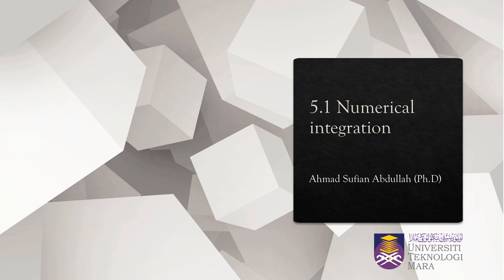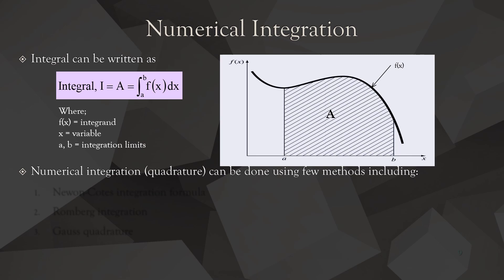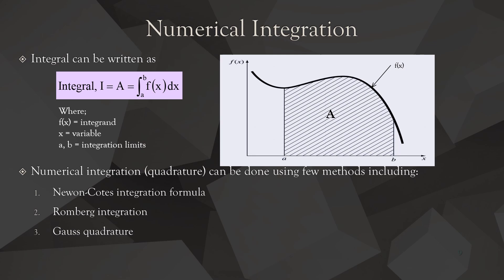From now on we will focus on numerical integration. The integral can be written as I equal to the integral from a to b of f(x) dx, where f(x) is the integrand, x is the variable, and a and b are the integration limits. Numerical integration, commonly known as quadrature, can be done using a few methods: Newton-Cotes integration formula, Romberg integration, and Gauss quadrature.